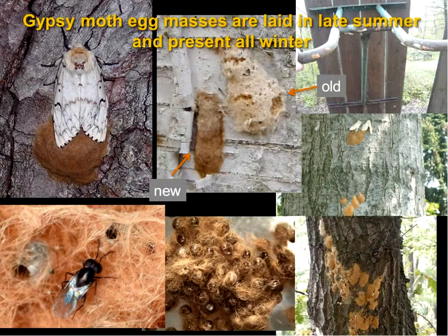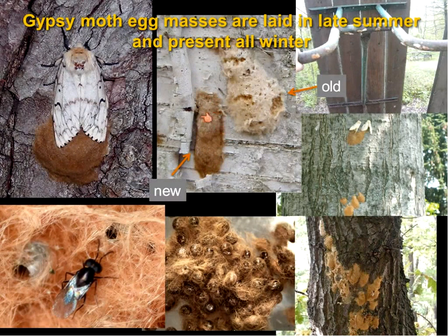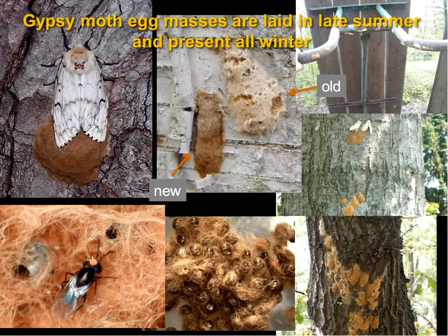Switching to basic biology: gypsy moth goes through one generation per year, and this time of year they spend most of the year in the egg stage. In late summer, females lay their eggs in a large mass — a matrix of eggs and frothy hair-like material from the abdomen. In the field you'll see current-year egg masses, which are darkish beige and quite firm when pressed, to be distinguished from older egg masses from previous years, which are more weathered and very spongy since the eggs have already hatched.